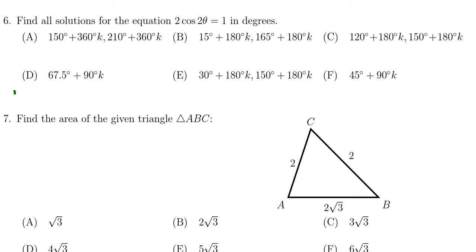So the first thing to do is to solve for the trigonometric function cosine in this situation. Cosine of 2 theta equals 1 half. When does cosine equal 1 half?